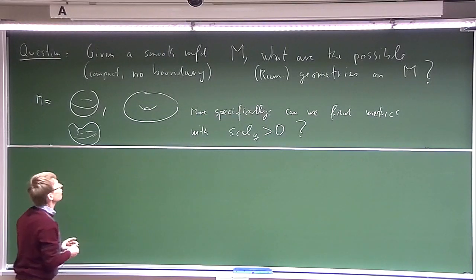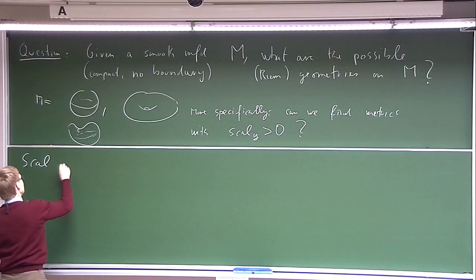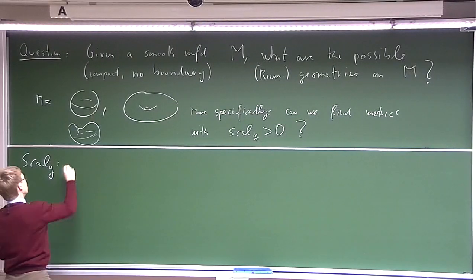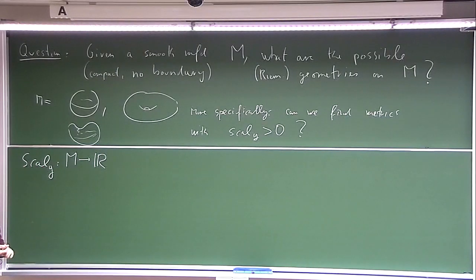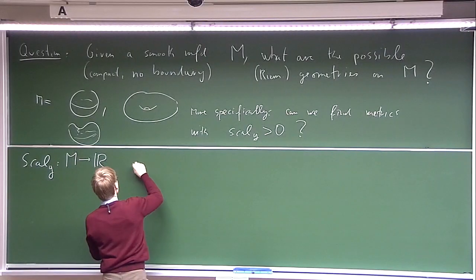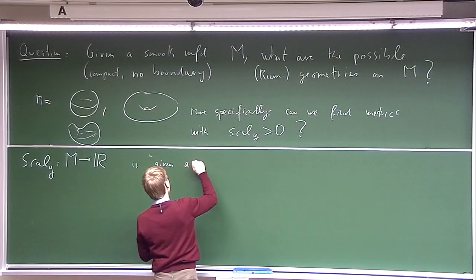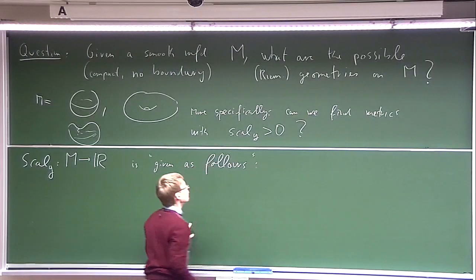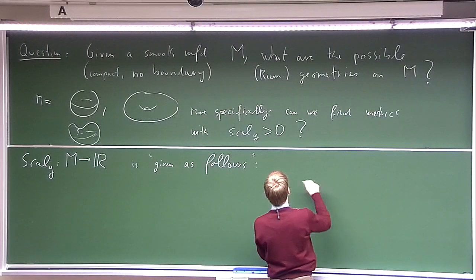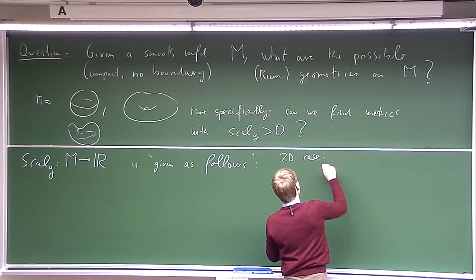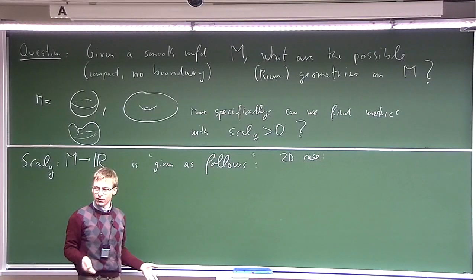Before we can answer this, we should understand a little bit about scalar curvature. Given a Riemannian metric, it is a smooth function on the manifold with values in ℝ. We should try to understand what this means.